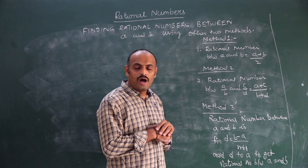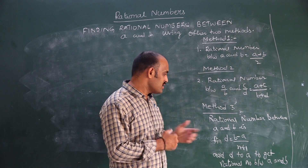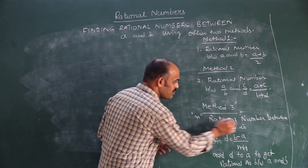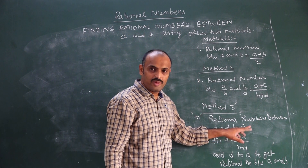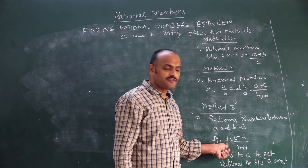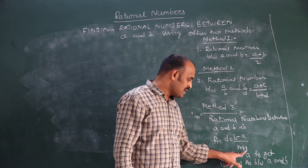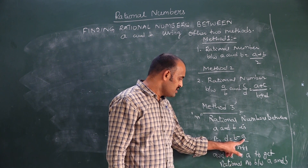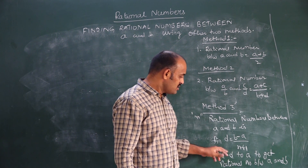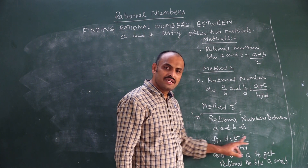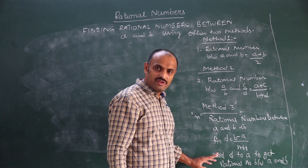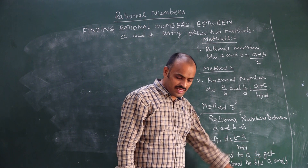In Method 3, to find n rational numbers between a and b, first find the difference d using the formula: d equals b minus a by n plus 1. Here b and a are the rational numbers, and n is the number of rational numbers required. You then keep on adding d to a, so that we get the rational numbers between a and b.